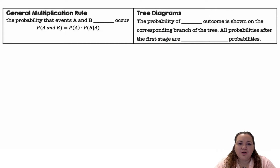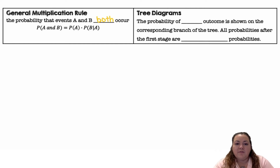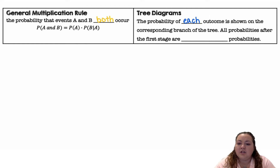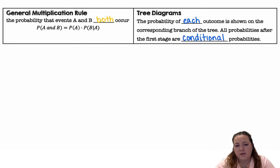We use the general multiplication rule to find the probability that event A and B both occur. The equation is: the probability of A and B is equal to the probability of A times the probability of B given A. Tree diagrams are a tool we use to help find probabilities — the probability of each outcome is shown on their corresponding branch of the tree. All probabilities after the first stage are conditional probabilities.